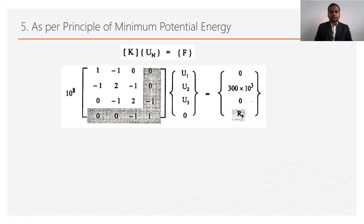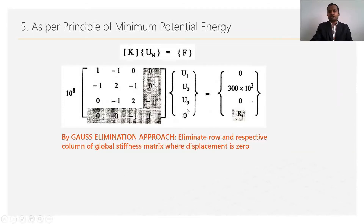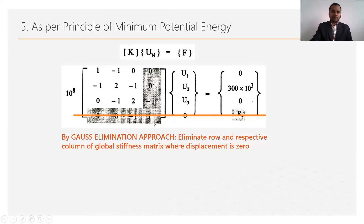To find displacements u1, u2, and u3, we use the Gauss elimination technique. As per Gauss elimination, we eliminate the row and respective column of the global stiffness matrix where displacement is 0. Since u4 = 0, we delete row 4 and column 4 of the global stiffness matrix.